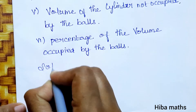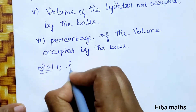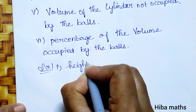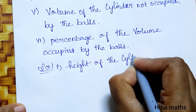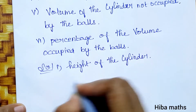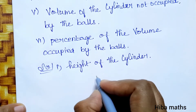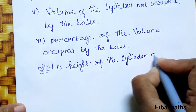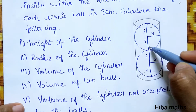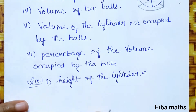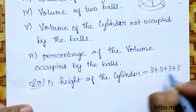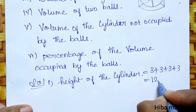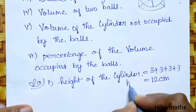Solution: First, height of the cylinder. As explained in the diagram, height of the cylinder is equal to 3 + 3 + 3 + 3, that is four 3s, which equals 12 cm. Height of the cylinder = 12 cm.